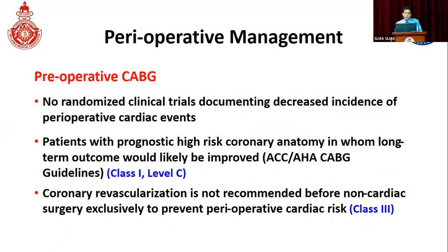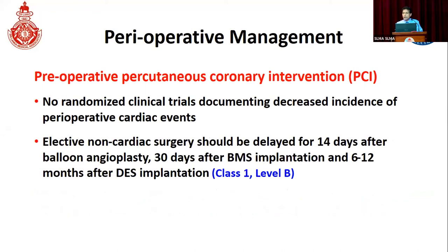For bypass surgery or stenting, there are no randomized clinical trials documenting decreased perioperative cardiac events by performing these procedures. However, if coronary anatomy suggests prognostic lesions where revascularization can improve survival, it should be considered before surgery. Coronary revascularization is not recommended before non-cardiac surgery exclusively to prevent perioperative cardiac risk. Perioperative PCI has no randomized trial evidence of benefit; when done, elective non-cardiac surgery should be delayed for 14 days after balloon angioplasty, 30 days after bare metal stents, and 6 to 12 months after drug-eluting stent placement.